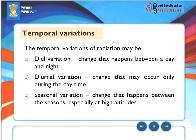The temporal variations of radiation may be: Diurnal Variation — change that happens between day and night; Diurnal Variation — change that may occur only during the daytime; and Seasonal Variation — change that happens between the seasons, especially at high altitudes.